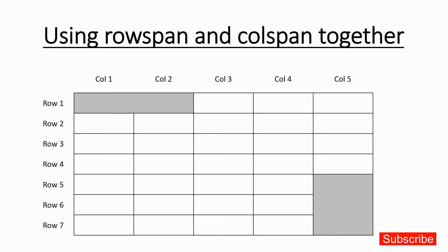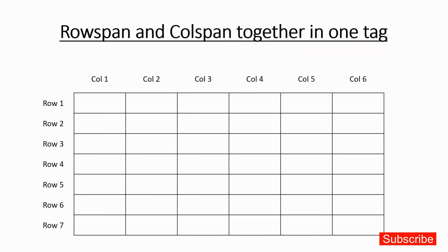Now if you see the table in front of you, it is the same table — seven rows and five columns. In the first row, the first two columns are merged. Similarly, for rows five, six, and seven, the fifth column is merged. We are going to see how to do this, and then we'll take more interesting examples — how to use rowspan and colspan together in one tag.